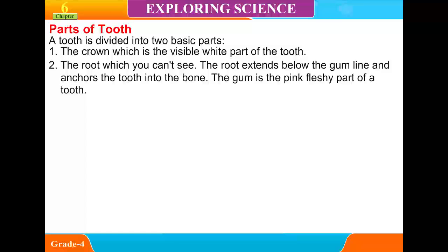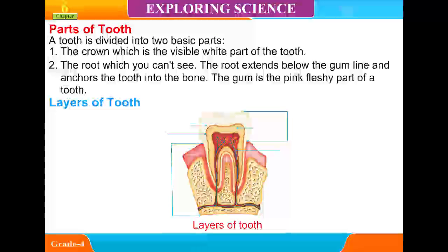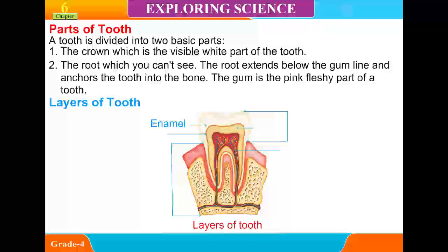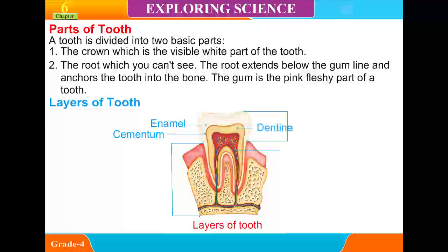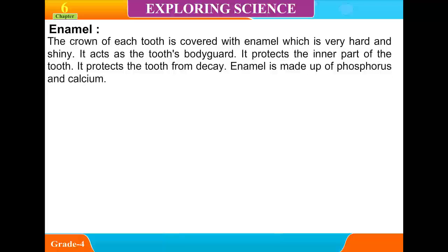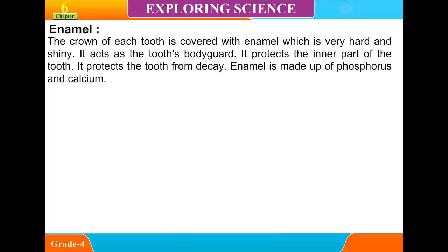The gum is the pink fleshy part around a tooth. Layers of Tooth. Enamel: The crown of each tooth is covered with enamel, which is very hard and shiny. It acts as the tooth's bodyguard. It protects the inner part of the tooth and protects the tooth from decay. Enamel is made of phosphorus and calcium.